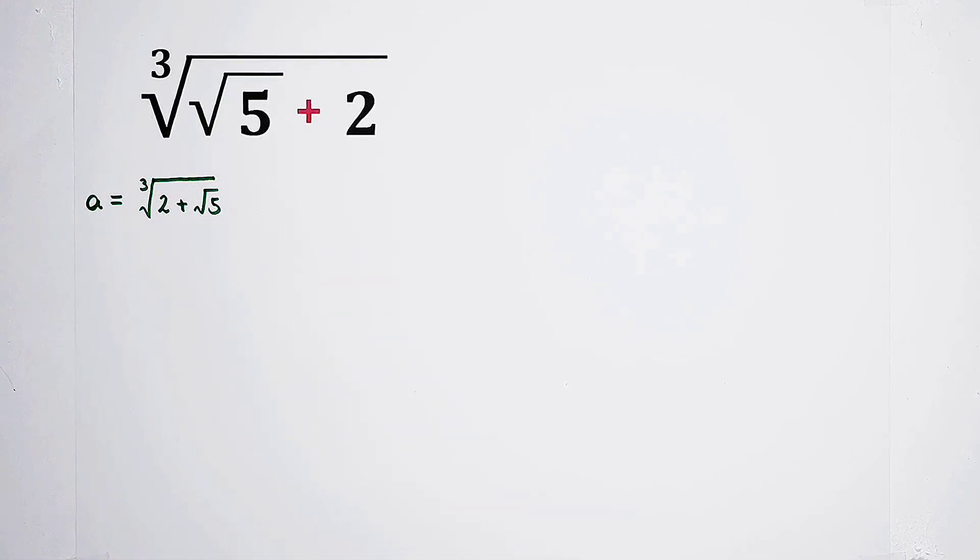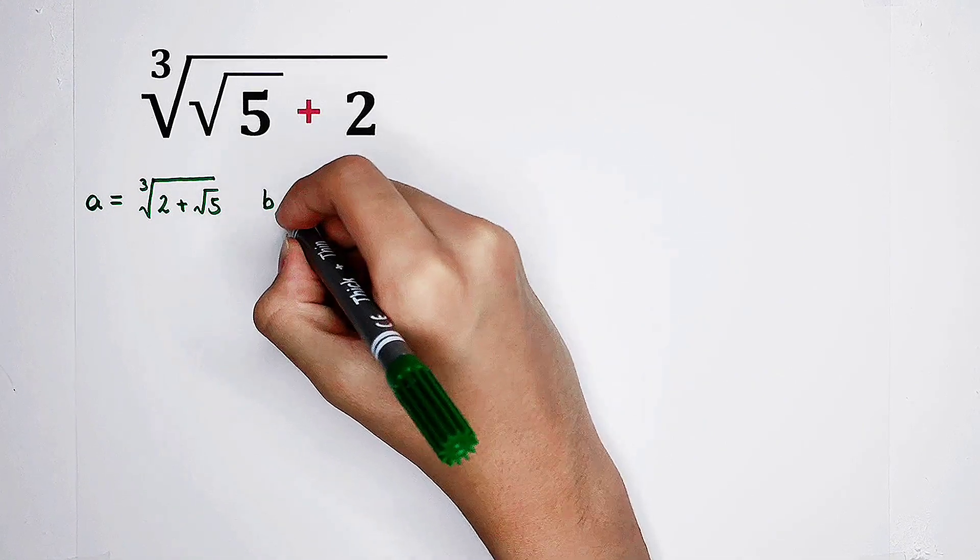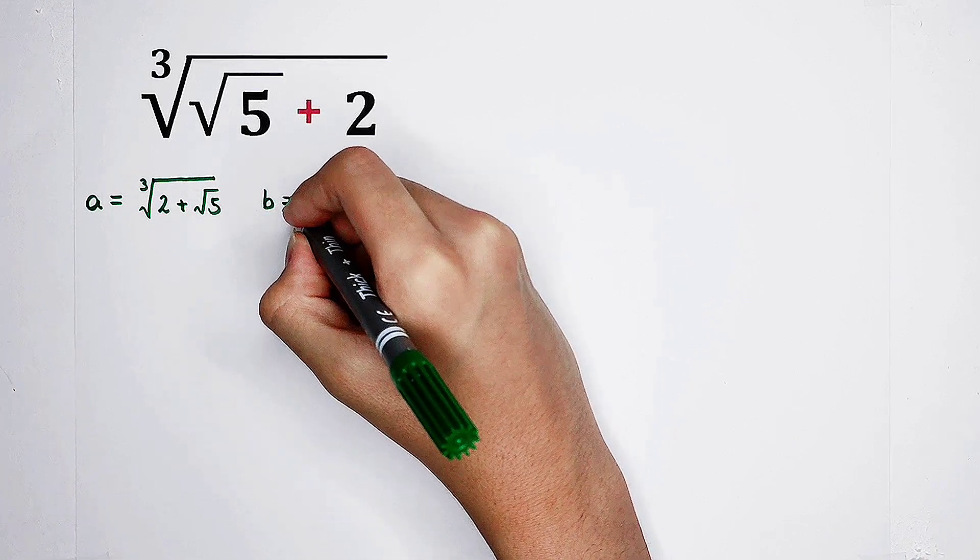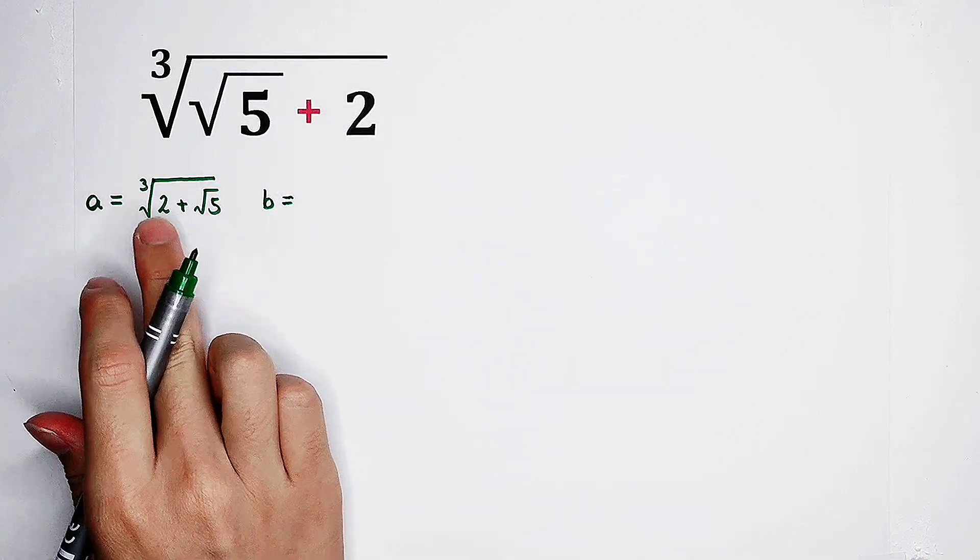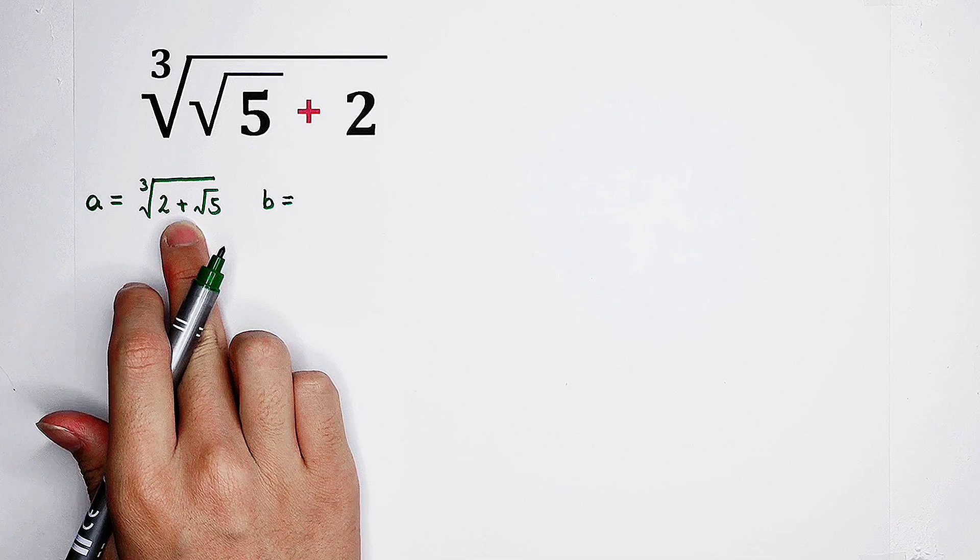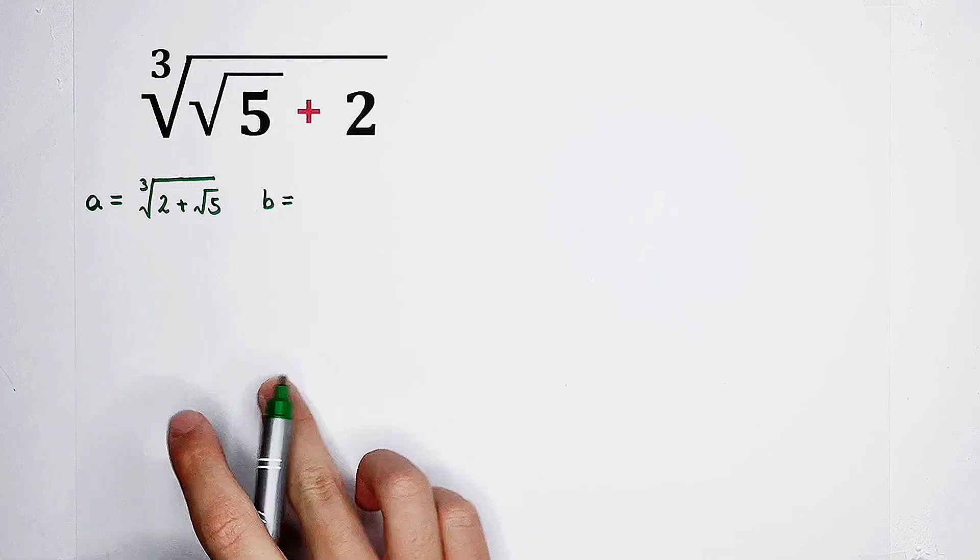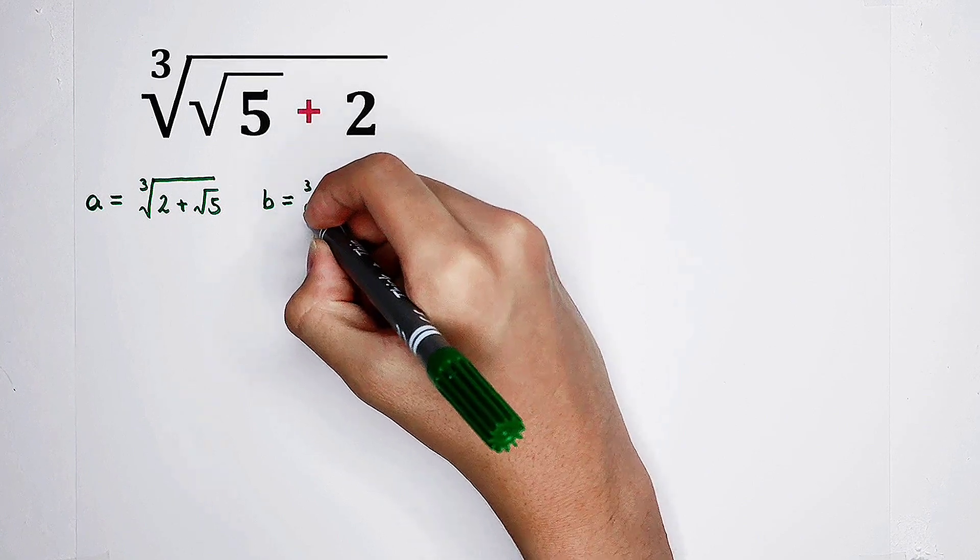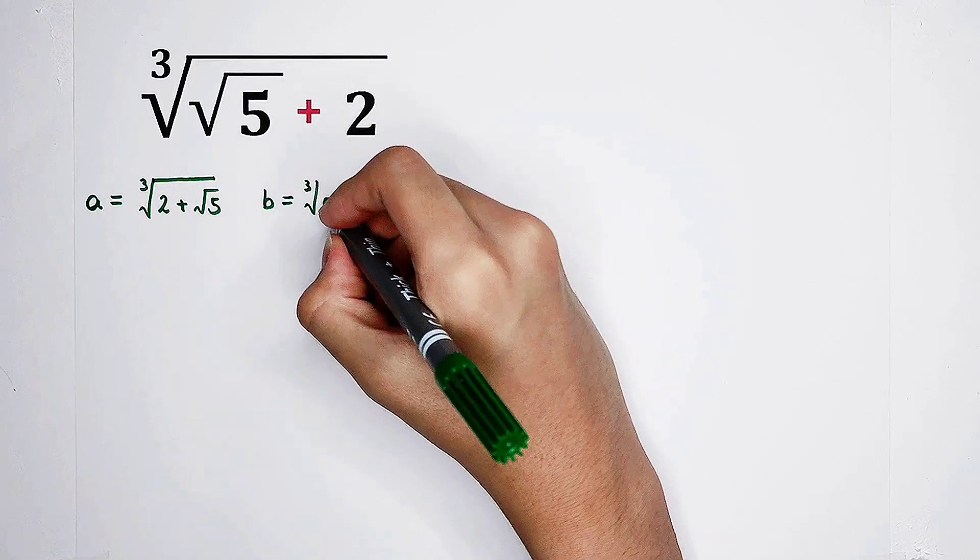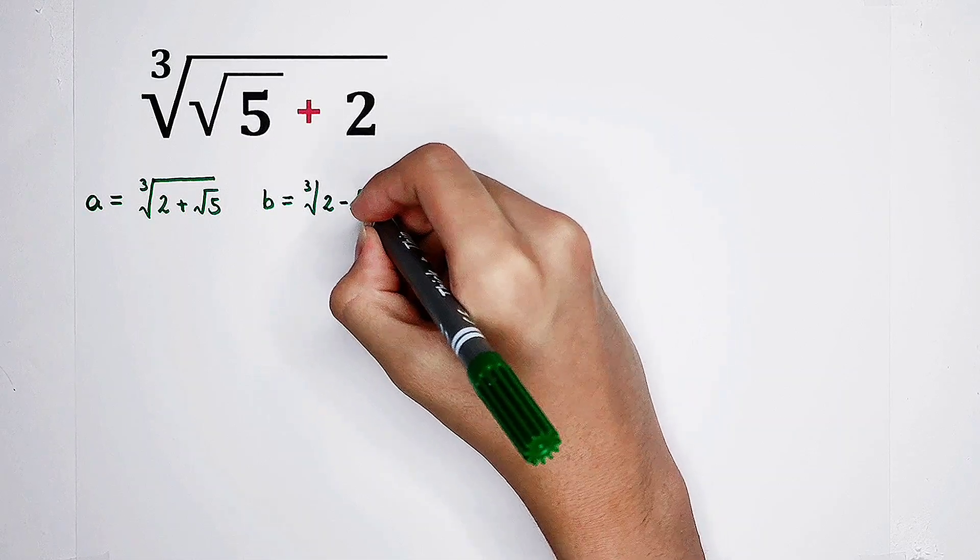So then, I'm gonna construct another form. What is it? We can let b be equal to its conjugate form. Of course, it is plus turns to minus. So easy. The cube root of 2 minus square root of 5.